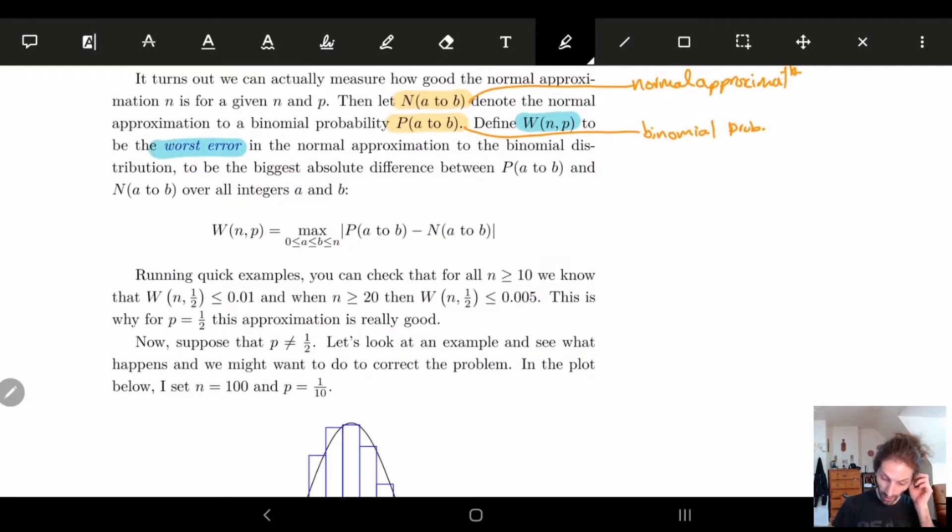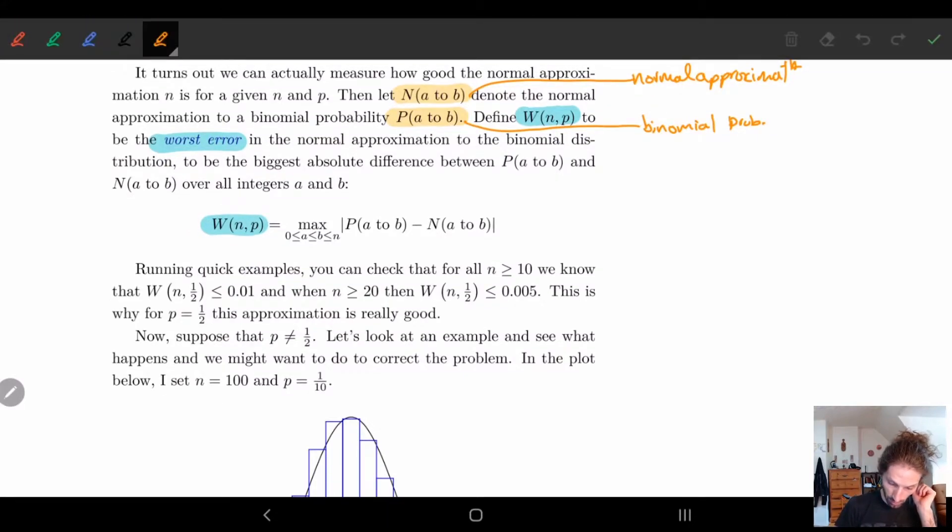So basically what we have is W(n,p) is going to be equal to this formula here. It's the maximum error.